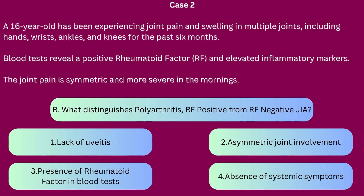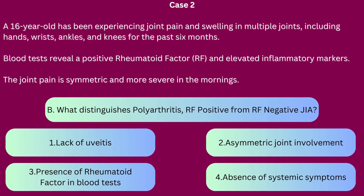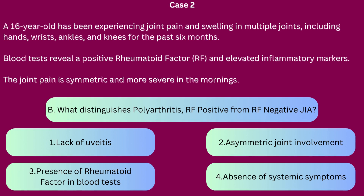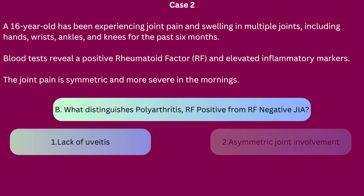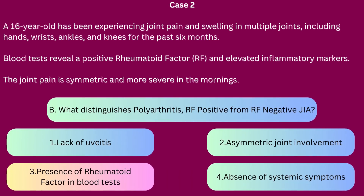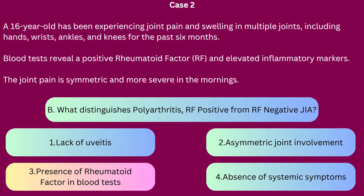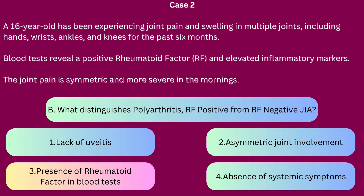Question B: What distinguishes polyarthritis rheumatoid factor positive from rheumatoid factor negative JIA? 1. Lack of uveitis, 2. Asymmetric joint involvement, 3. Presence of rheumatoid factor in blood tests, 4. Absence of systemic symptoms. The correct answer is 3. The key differentiator is the presence of rheumatoid factor in the blood. This is important because RF-positive JIA tends to have a more aggressive course and a higher risk of joint damage and disability. The rheumatoid factor is an antibody not typically found in healthy children and indicates a more severe form of arthritis.